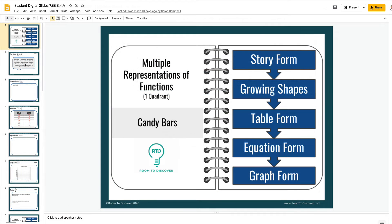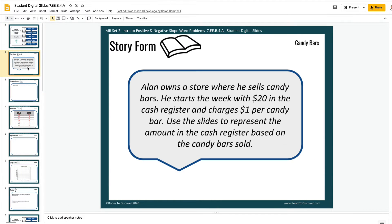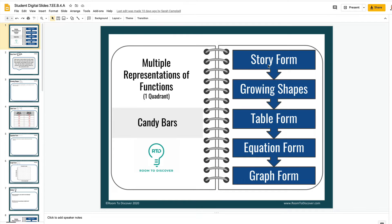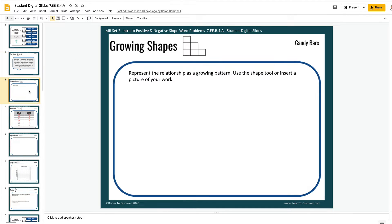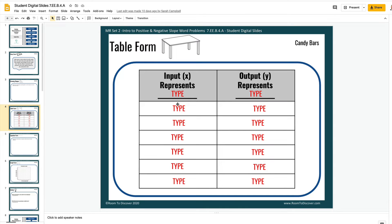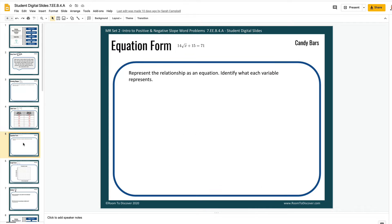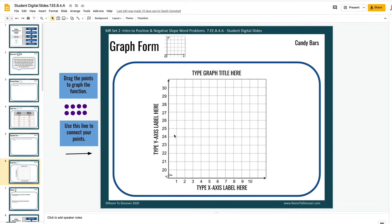This lesson is called Multiple Representations of Functions. And it involves basically a word problem or story form and asks students to show in multiple forms as a growing shape, in a table, an equation, and as a graph. So here's the story form. We give them the scenario. Then they show it as growing shapes. And just like we looked at before, we can insert squares and create these growing shapes. They can input the values in the table. They can show it as an equation. And finally, on the graph.